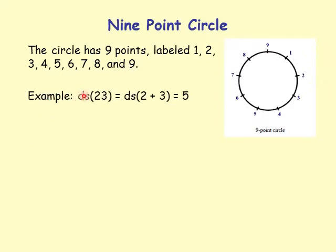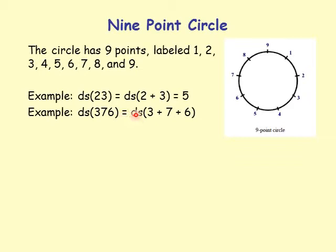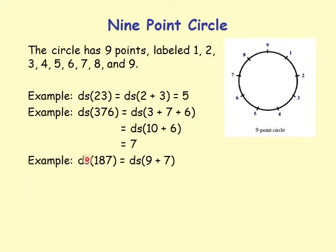More examples: the digit sum of 23 is the digit sum of 2 plus 3, which is 5. The digit sum of 376 is 3 plus 7 plus 6 equals 16, and then 1 plus 6 equals 7. For 187: 1 plus 8 is 9, plus 7 is 16 — wait, digit sum of 16 is 1 plus 6 equals 7.